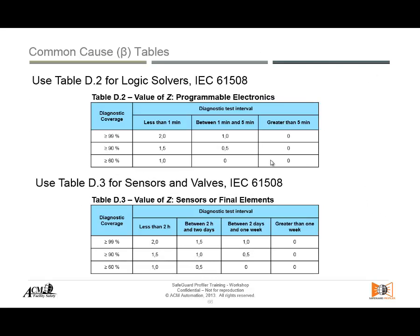Tables D2 and D3 from IEC 61508 — one for logic solvers and one for sensors and valves (final elements) — are where you calculate the Z value. Remember, S = X times Z plus 1 plus Y. For example, for sensors or final elements, if you are testing your system in less than 2 hours, meaning diagnostic coverage is greater than or equal to 99%, you give a score of 2. Your beta D will be 2.